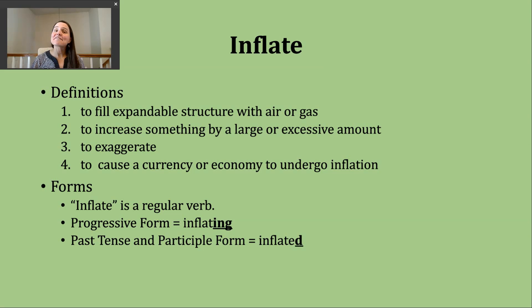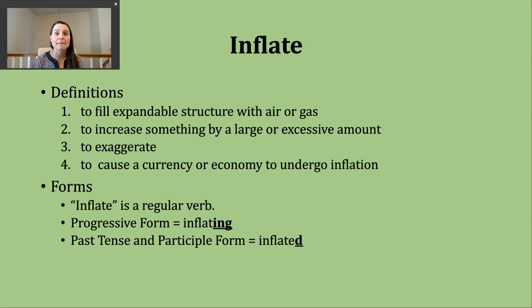You should know that inflate is a regular verb. To make the progressive form, drop the e and add -ing to form inflating. The past tense and participle forms are made by adding a -d to the end, since it already ends in an e. Our base verb inflate ends in an unvoiced t sound, so when adding the past tense or participle ending, we add an extra syllable and say -id: inflated.